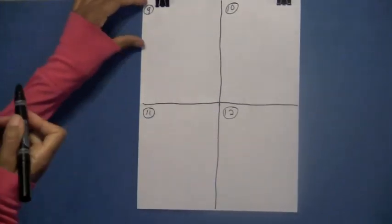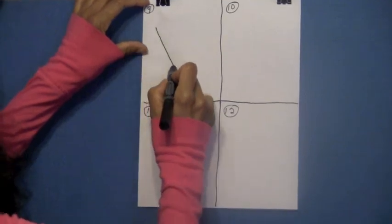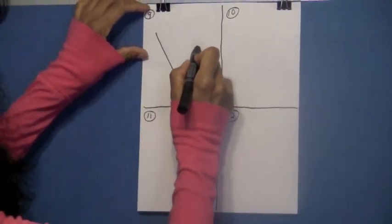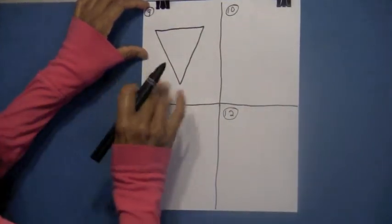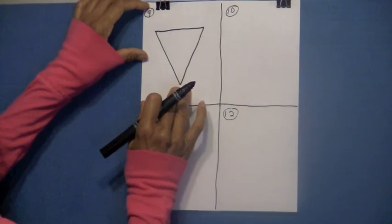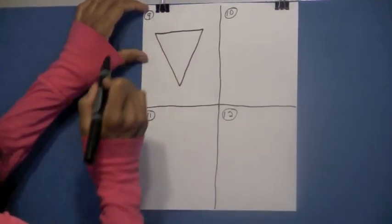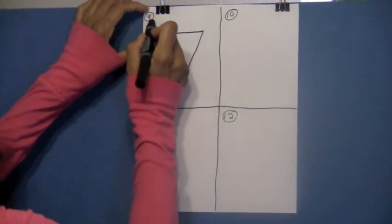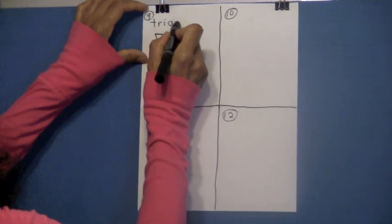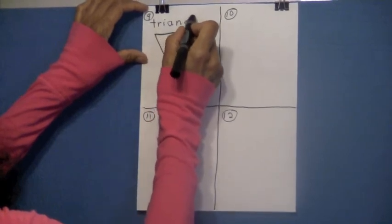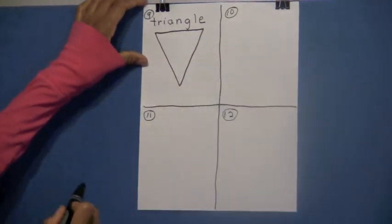The first, number 9, we are going to draw a triangle again. Remember, a triangle has 3 sides, not necessarily 3 equal sides, but we're going to make this one. I want you to make a triangle look like this. And how do we spell triangle? I want to hear you. And you're writing at your spelling. T-R-I-A-N-G-L-E. Triangle.